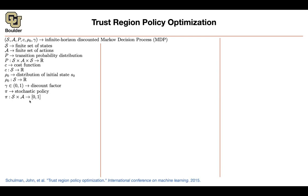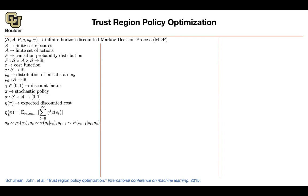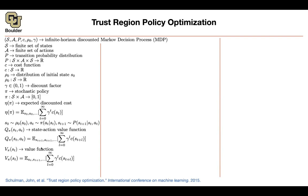You have an initial distribution, a discount factor, and a stochastic policy which, given the state, gives you some action. We have an expected discounted cost — previously you had expected discounted return, now it's expected discounted cost. The new notation is eta, which depends on your policy because your policy determines the next state. We define our state-action value function: each state and action given the policy has a value. Your value function comes from taking the expectation over the action A_t as well.